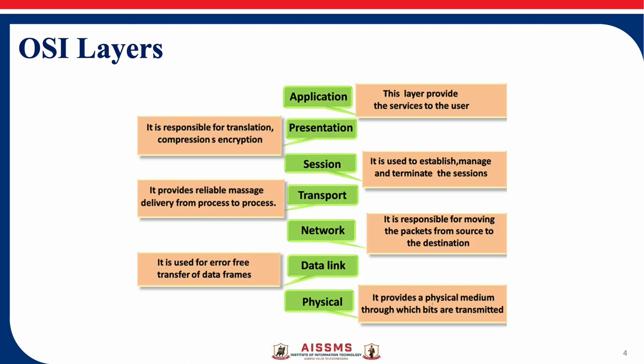Now we will see the functions of each layer. The first one is the physical layer. The physical layer is responsible for the physical cable or wireless connection between network nodes. It defines the connector, the electrical cable or wireless technology connecting the devices, and is responsible for transmission of the raw data, which is simply a series of zeros and ones.